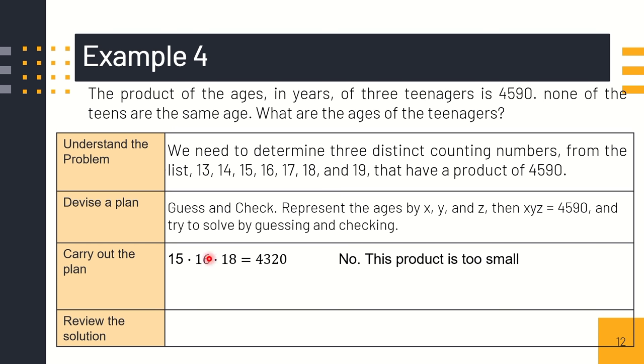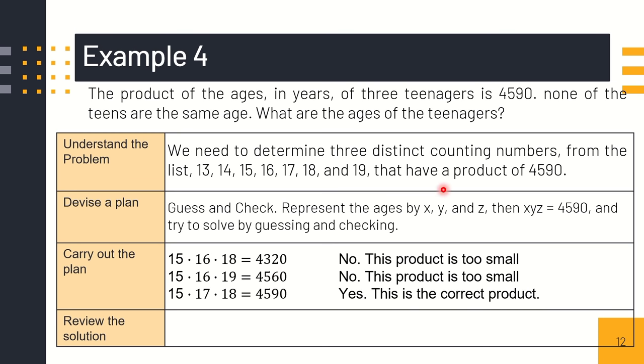That is 4,320, which is far from the product of 4,590. We can try another one: 15 times 16 times 19, that is 4,560. And 4,560 is far from 4,590. We try 15 times 17 times 18 and that is 4,590. Yes.